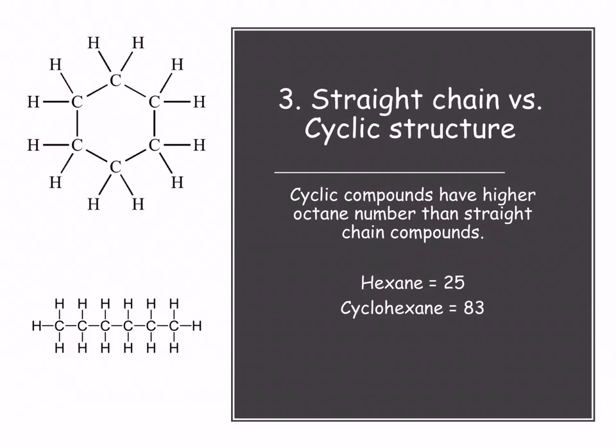And then we're going to look at straight chains and cyclical structures. Cyclical structures have a higher octane number. So if we look at hexane with an octane number of 25, cyclohexane is fantastic, it has a number of 83. Remember cyclohexane is just hexane in a cyclical structure.